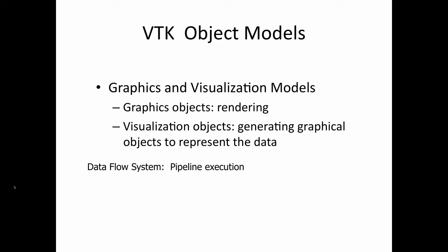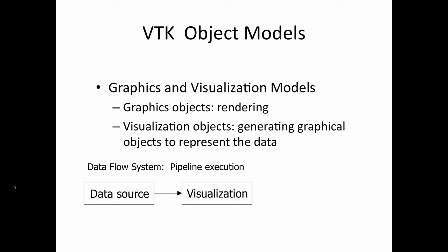VTK uses a data flow system that executes a visualization pipeline. You always start from the source of the data — the data you want to visualize. The data are then sent through visualization objects for transformations, and the output visualization objects are geometries, something that can be rendered. The graphics objects take the geometry and produce the final image.